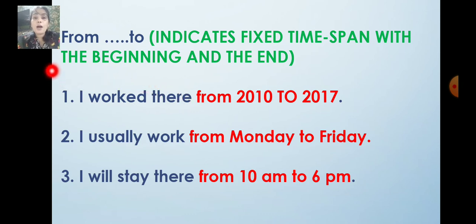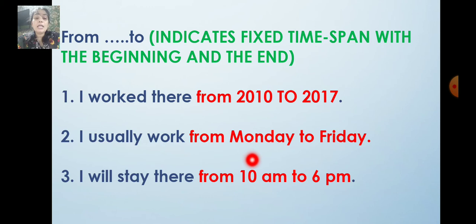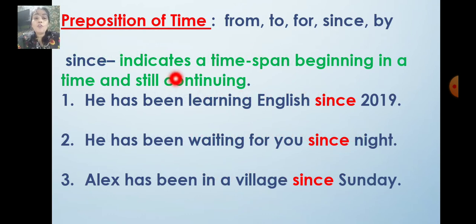Next one is 'from' and 'to' — it indicates a fixed time span with the beginning and the end. I work there from 2010 to 2017. I usually work from Monday to Friday — beginning is Monday, ending is Friday. I will stay there from 10 a.m. to 6 p.m. So 'from' and 'to' show the beginning and the ending of the timing. We had finished from 2 p.m. to 4.